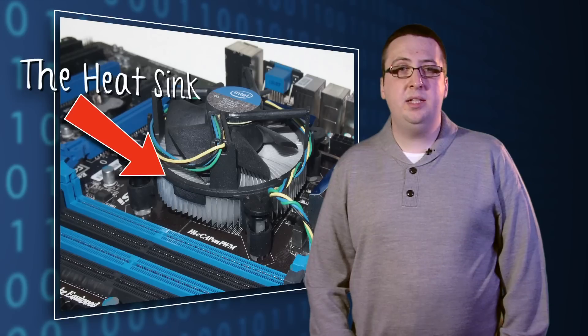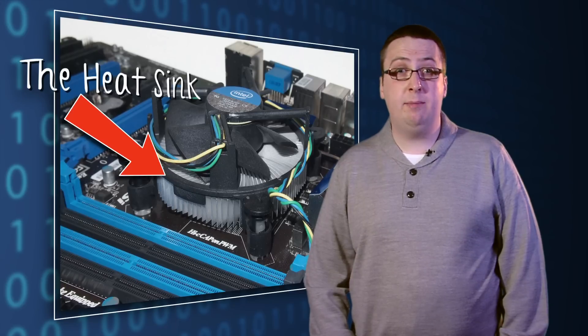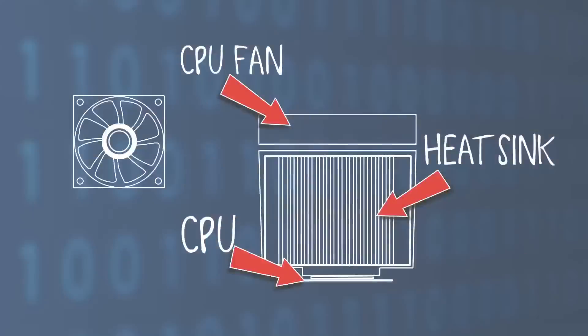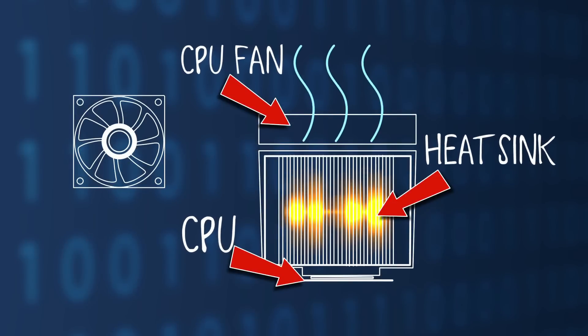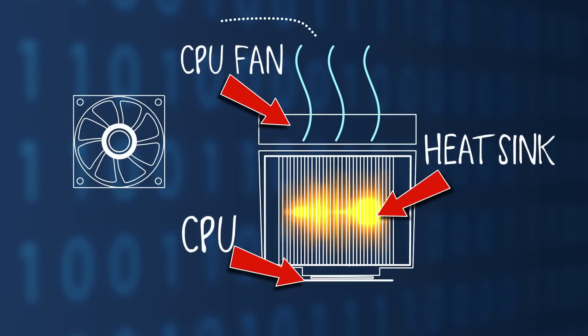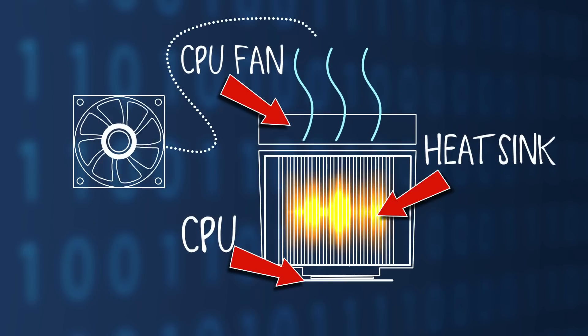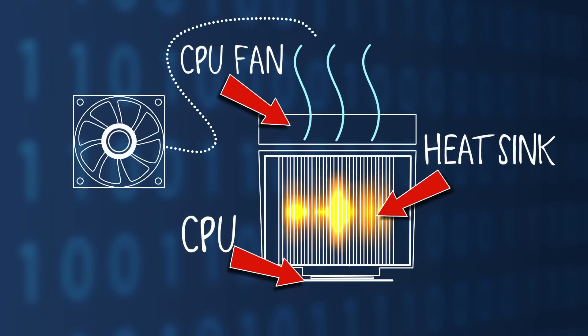As the CPU carries out millions of calculations per second, it gets very hot. We need to get the heat away from the processor before it damages it. To do this we use a heatsink, which draws it out while a fan on top blows air onto it to move the heat away.